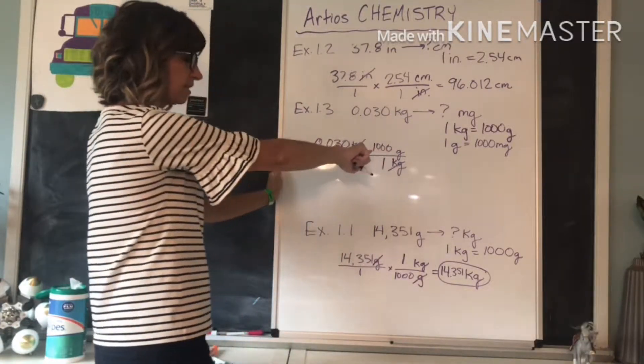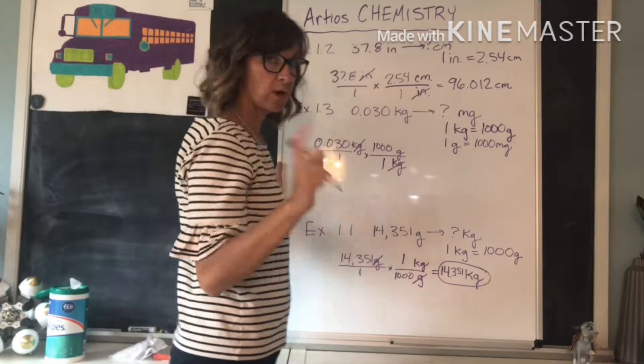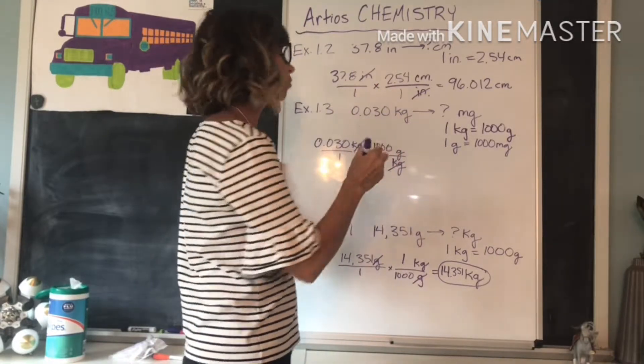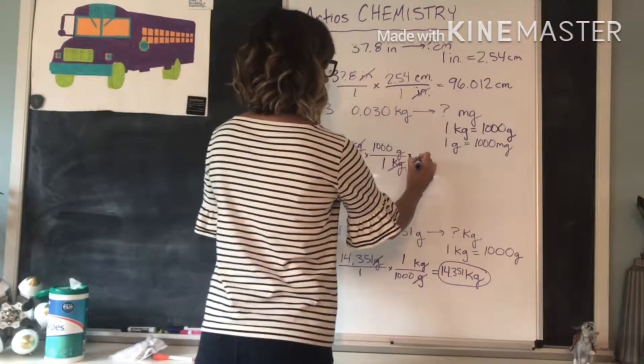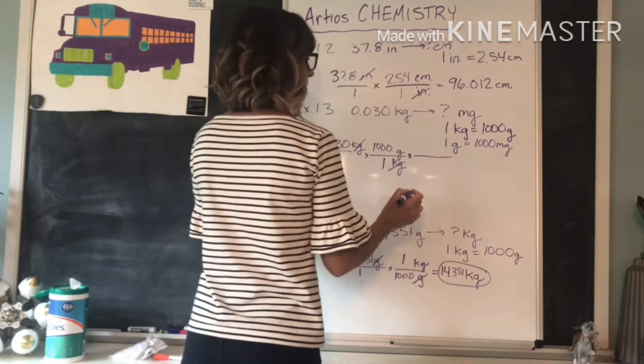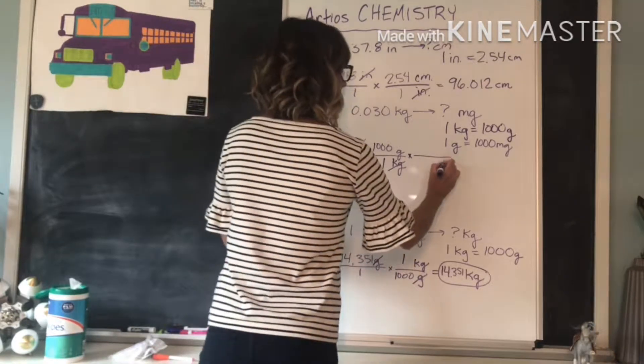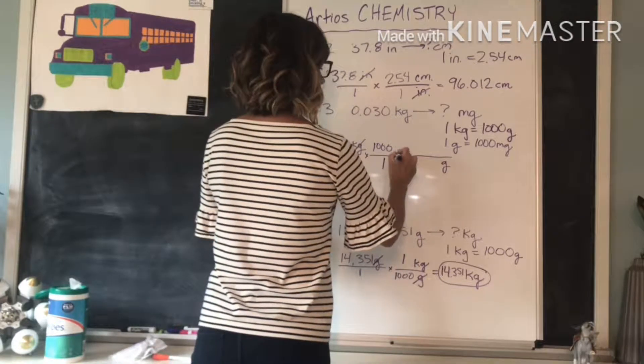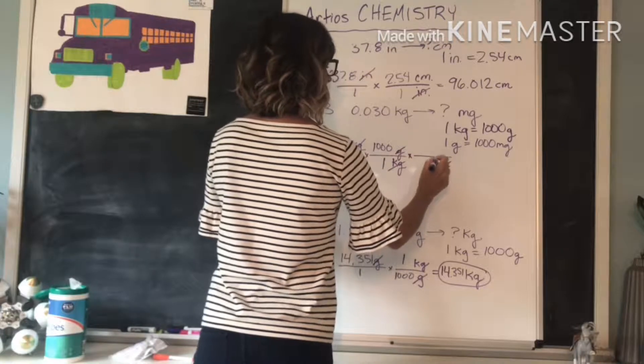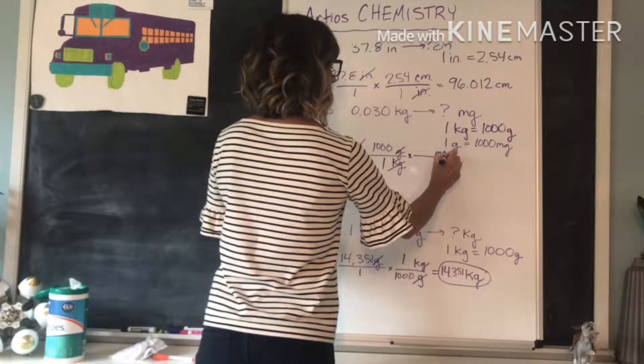If we multiplied that out, we would end up with grams, but we don't want to end up with grams. So we're going to multiply it one more time. Grams is going to go on the bottom, so grams will cancel out, and milligrams is going to go on the top.